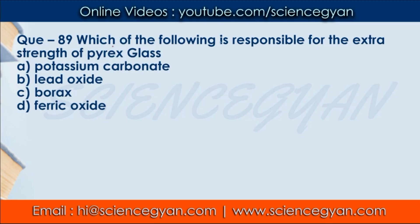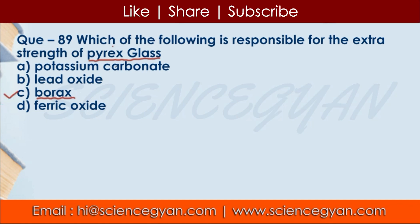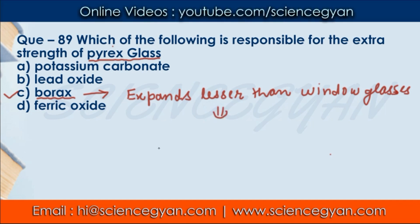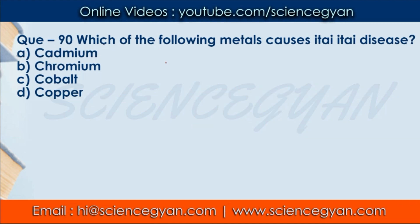Question number 89: Which of the following is responsible for the extra strength of pyrex glass? The correct answer is borax. When borax is added to simple glass, pyrex glass is formed. This decreases its thermal expansion coefficient — it expands less than window glass. This means that under heat, cold, or unfavorable conditions, pyrex glass maintains its properties and does not expand significantly.